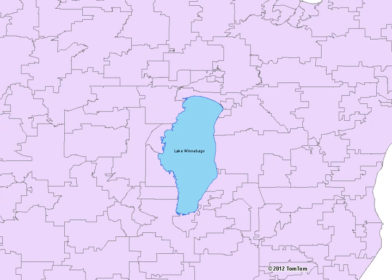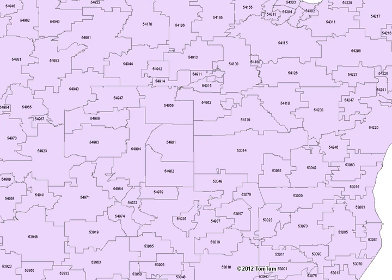We're going to be exploring the Lake Winnebago area, as you can see the lake in the center of the map. When turning off the lake layer, you can see all of the zip codes labeled.